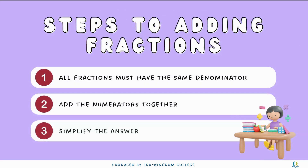With that idea in mind, the steps to adding fractions is actually very simple. There are three steps we need to follow. One: all fractions must have the same denominator. Two: add the numerators together. Three: simplify the answer.